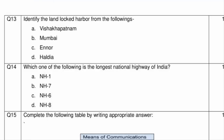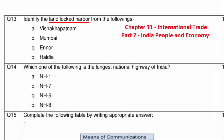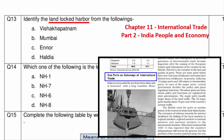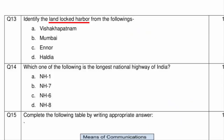Question 13 asks to identify the landlocked harbour from the options. This is related to international trade, from Chapter 11 of Part 2 book India People and Economy. The answer can be found under the topic 'Seaports as Gateways of International Trade.' The answer is Option A — Visakhapatnam.